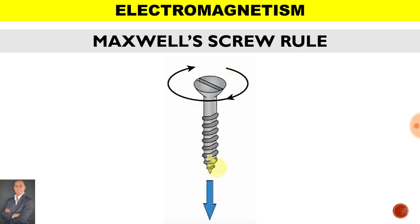Here we have Maxwell's screw rule. Now if we're tightening the screw, the downward motion would be the direction of current, and the clockwise direction of the screw turning would represent the lines of magnetic flux.